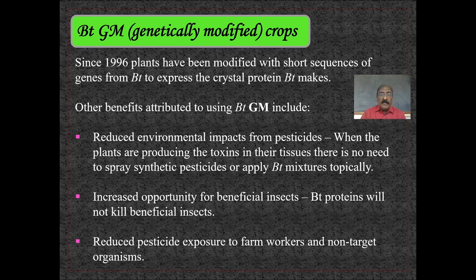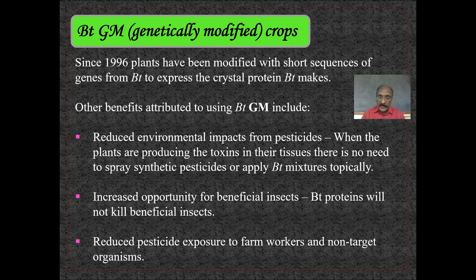Coming to Bt genetically modified crops: since 1996, plants have been modified with short sequences of genes from Bt to express the crystal protein, making them resistant to insect pests. Benefits include reduced environmental impact from pesticides — when plants produce toxins in their tissues, there is no need to spray synthetic pesticides. Bt proteins also will not kill beneficial insects, and there is reduced pesticide exposure to farm workers and non-target organisms.